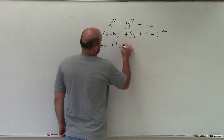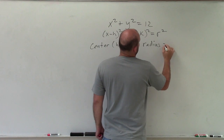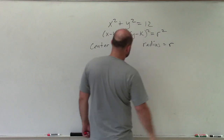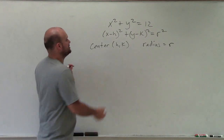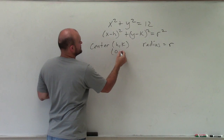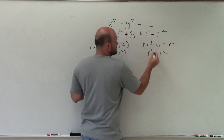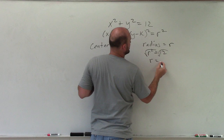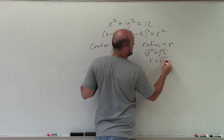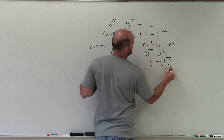So the center is h, k, and the radius is equal to r. Well, I'm not subtracting anything, so in this case I just have 0, 0. And r squared is equal to 12. So to solve for r, take the square root. r equals the square root of 12, which can be broken down into square root of 4 times 3, which gives r equals 2 square root of 3.